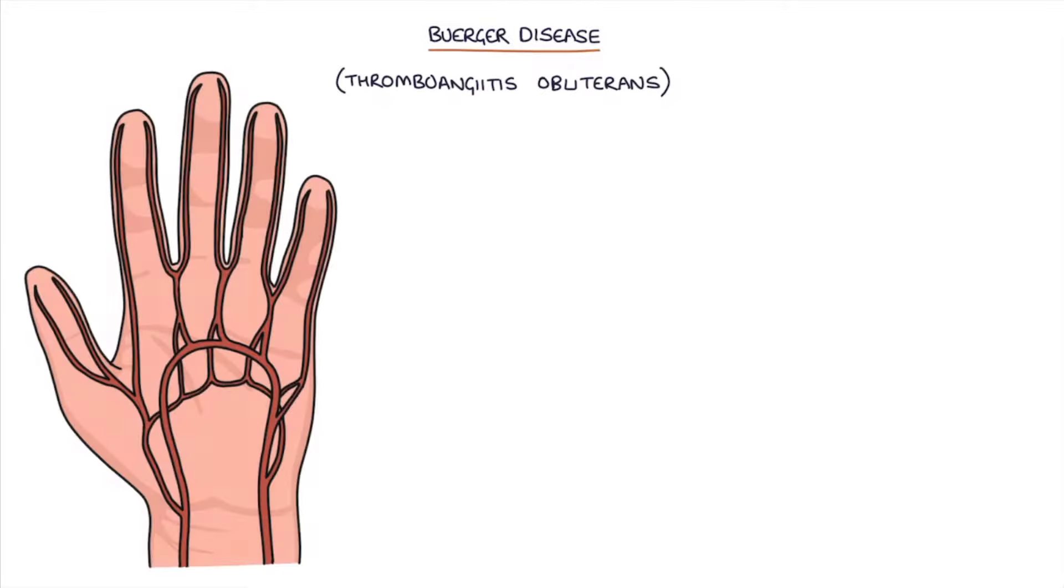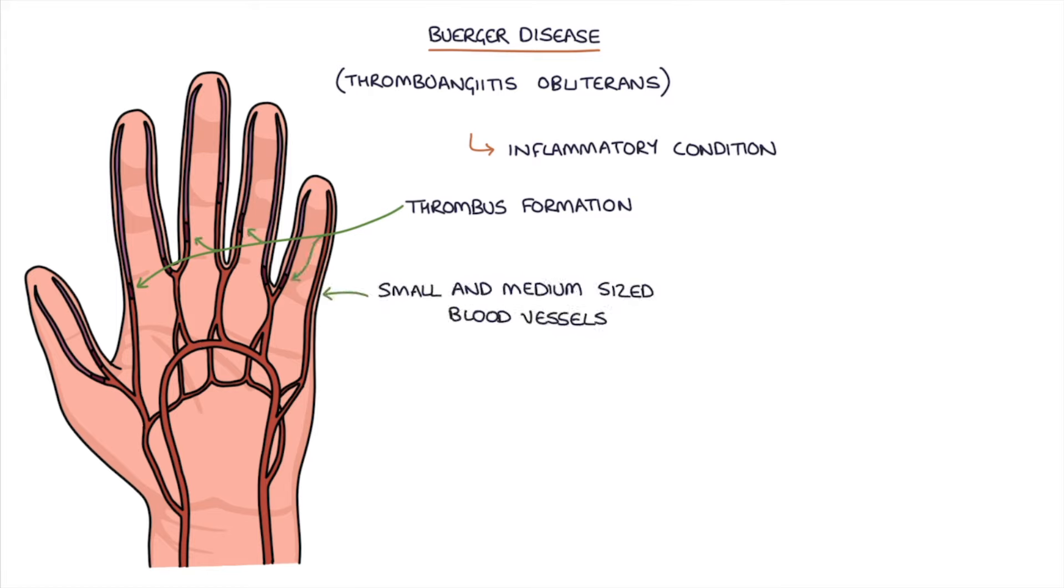Buerger disease is also known as thromboangitis obliterans. It's an inflammatory condition that causes thrombus formation or blood clots in the small and medium-sized blood vessels in the distal arterial system, which affects the hands and the feet.